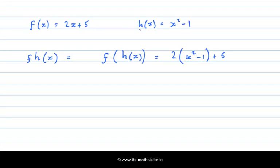So the output of the h of x function, we get x squared minus 1 as our output. And that is an input into the second function, which is 2 times something plus 5. So it's 2 times x squared minus 1 plus 5. And we can simplify that. We can get 2x squared minus 2 plus 5, which is 2x squared plus 3. So we could say that f after h of x is this function here. We can write it as a single function now.